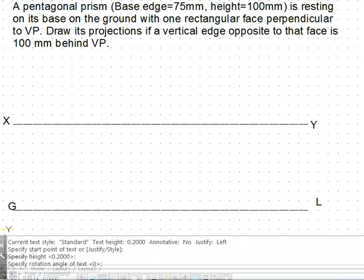It is resting on its base on the ground, that means the top view will be a pentagon. One rectangular face is perpendicular to VP, that means it will be perpendicular to the XY line in the top view. That is how we shall draw it.